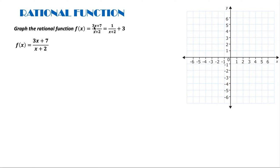But now, for example, if we have 3x plus 7 divided by x plus 2 and we use long division, we are going to get this function here: 1 over x plus 2 plus 3. Now I am going to solve the same problem we did before, but from this perspective. So if we have f of x is equal to 3x plus 7 divided by x plus 2, let's try it this way.